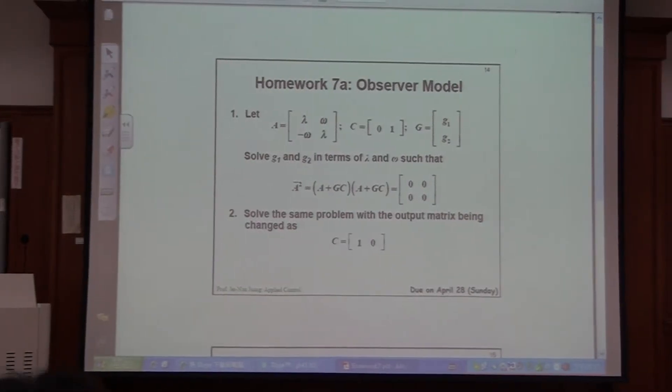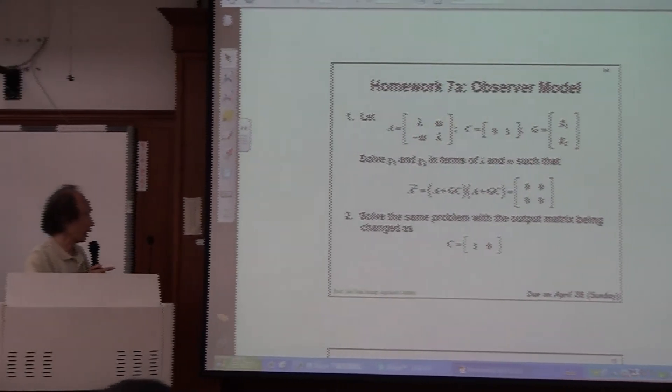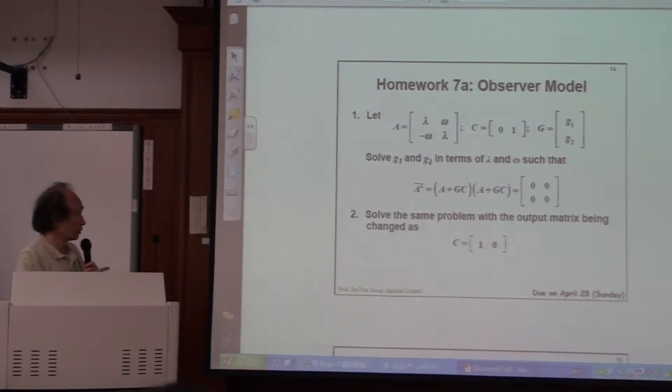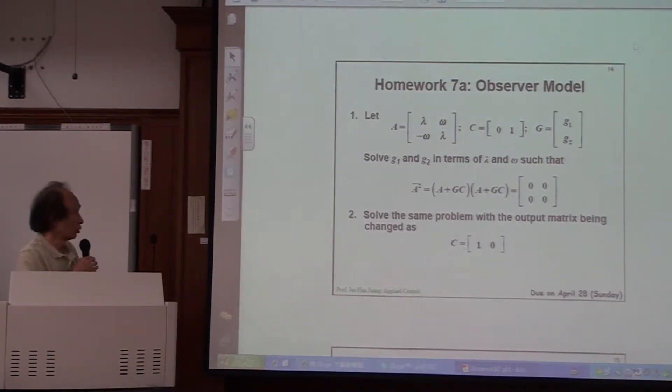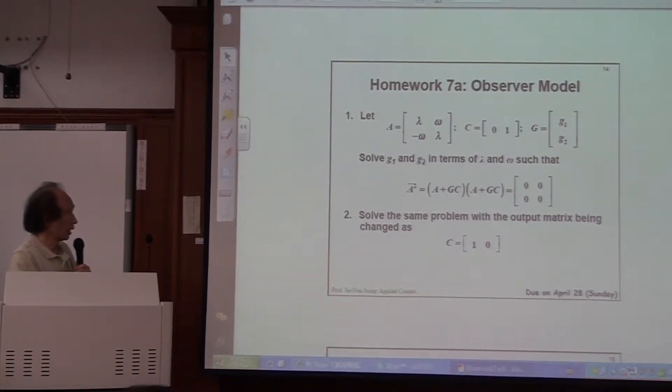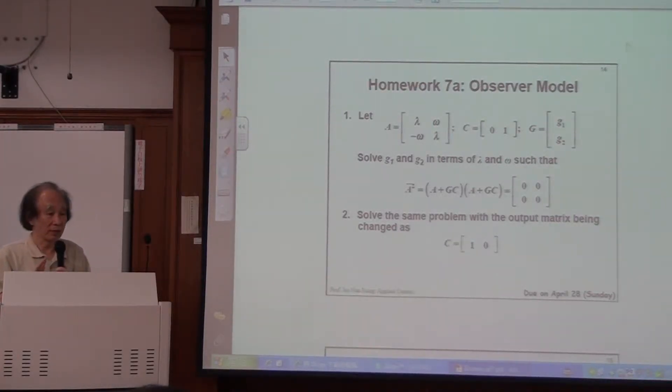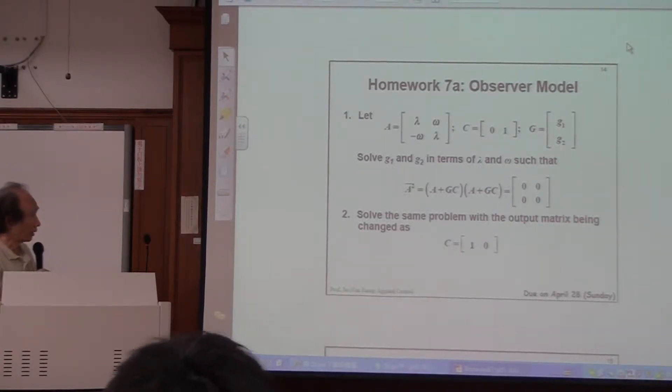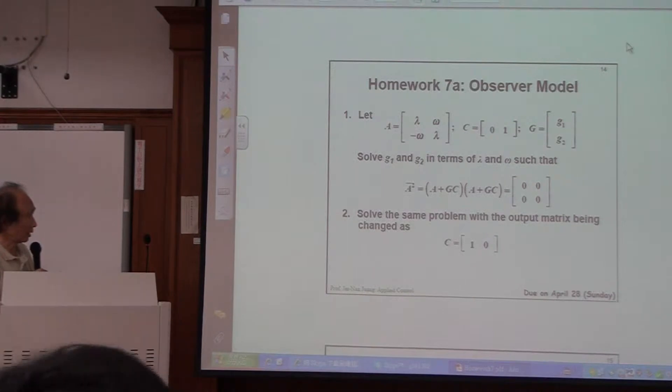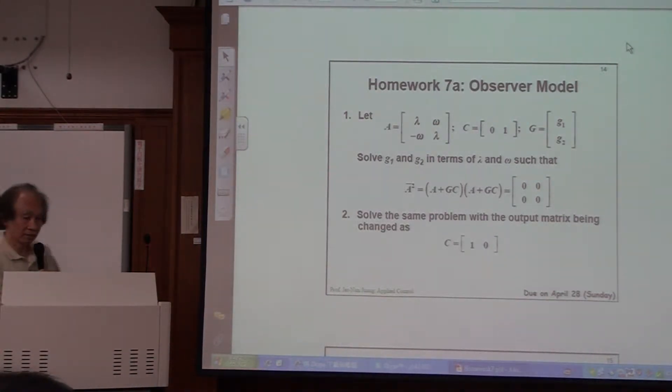Your practice to obtain an observer gain to build an observer model. So this is very easy. If you just follow this process to do the work, it will take you a long time to get it. My estimation is maybe 10 to 15 minutes. You've got 7A.